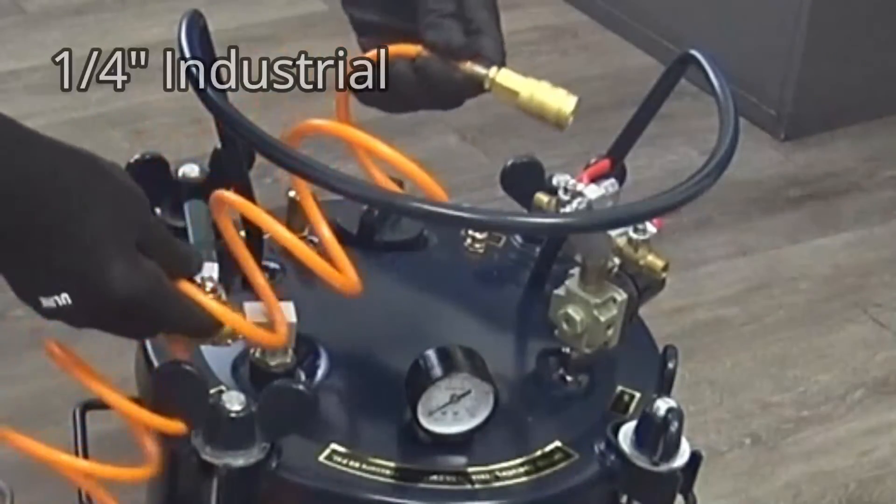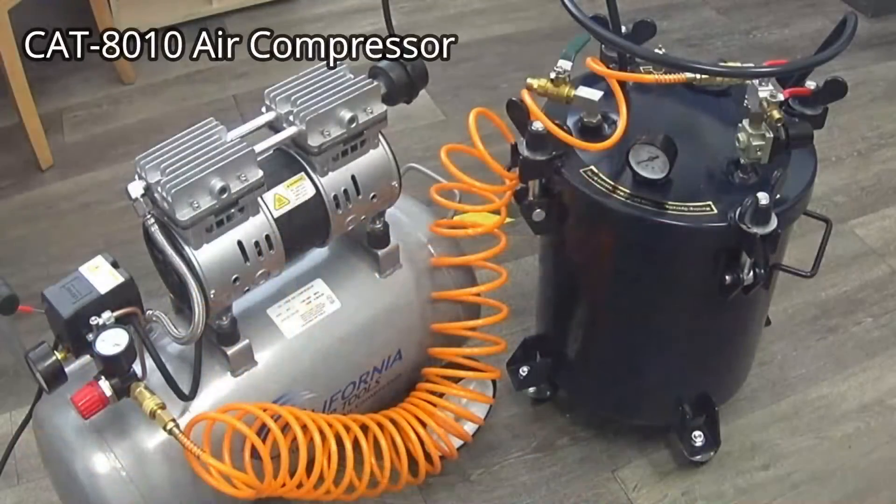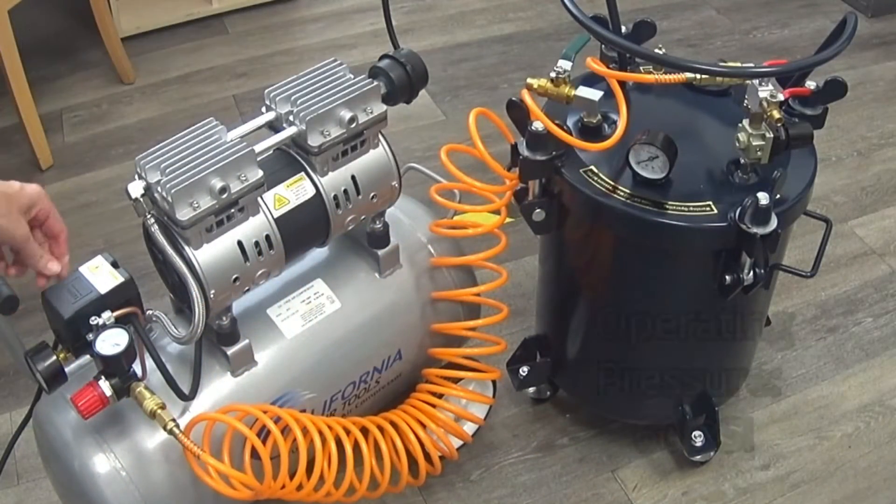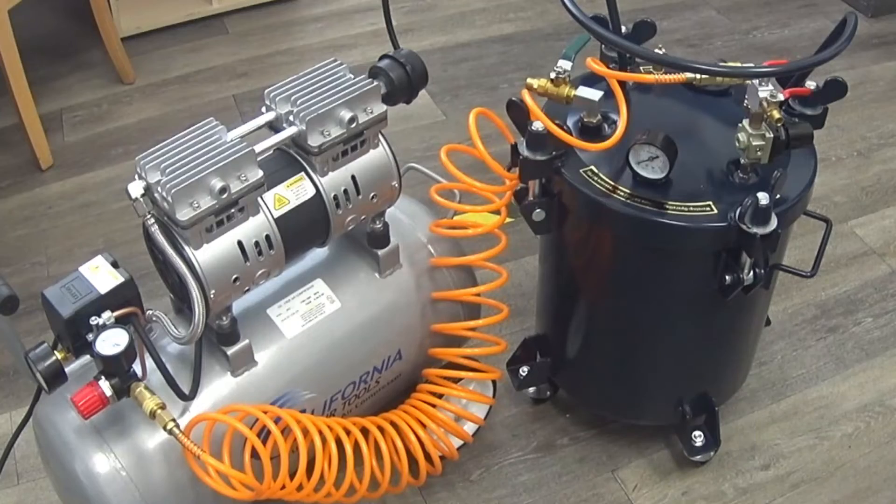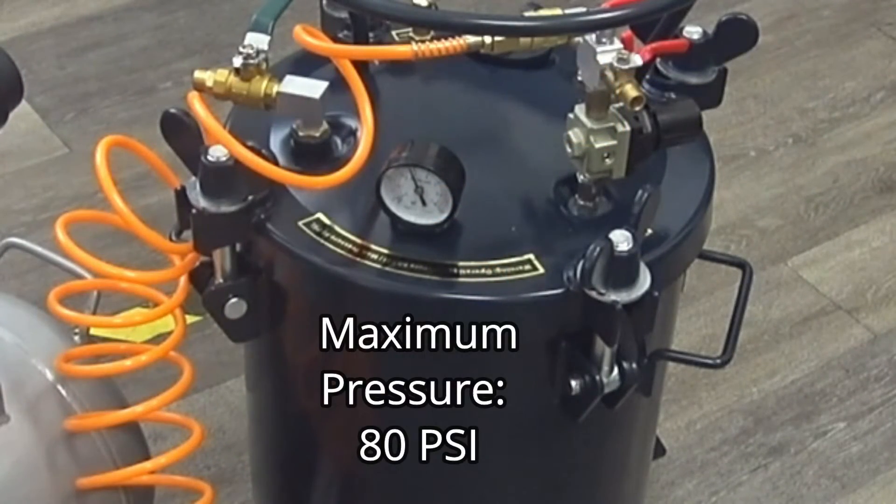The air hose input connector is a quarter-inch industrial male. The 365C has an operating pressure of 60 psi and a maximum pressure of 80 psi.